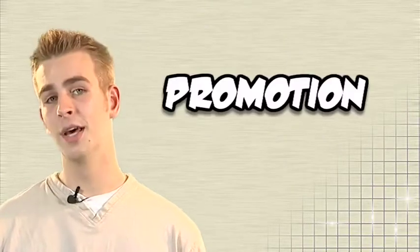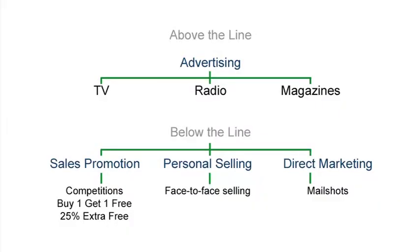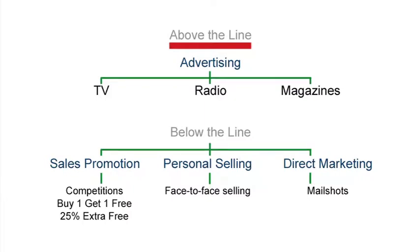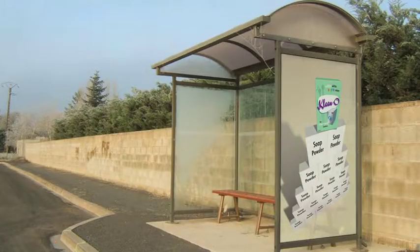Let's look at the third part of the marketing mix: promotion. Promotion can either be above the line or below the line. Above the line is really mainstream advertising that we see all the time. Apart from the examples on the diagram, there are also billboards, bus stop advertising, plus loads of others.